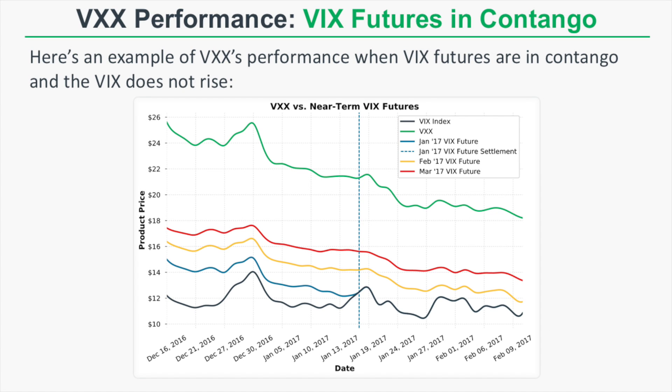So in this graph, we're looking at a period of time in which the VIX index is at a level below the VIX futures, which means that the VIX futures are in a state of contango. The index that VXX tracks keeps a weighted portfolio of near-term VIX futures — that means the first and second month VIX futures. So in the first portion of this graph, to the left of that blue dashed line, the VXX performance is going to be tied to the January and February VIX futures. The VIX index is trading between 12 and 14, and the January and February VIX futures start between 14 and 16 dollars. As the VIX index remains low, the January and February VIX futures are slowly losing value as they converge towards the VIX index. VXX also decreases in value since VXX's performance is tied to the performance of those near-term VIX futures.